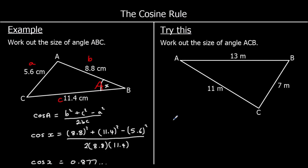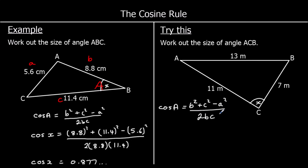One for you to try — pause the video and give it a go. Angle ACB, A to C to B, is what we're working out. We use the cosine rule because we know all three lengths and are working out one of the angles: cos A equals b squared plus c squared minus a squared over 2bc.